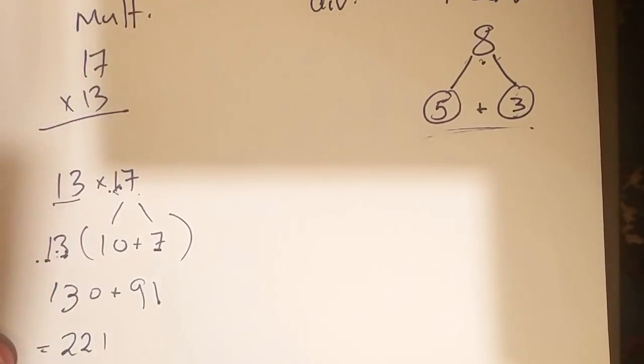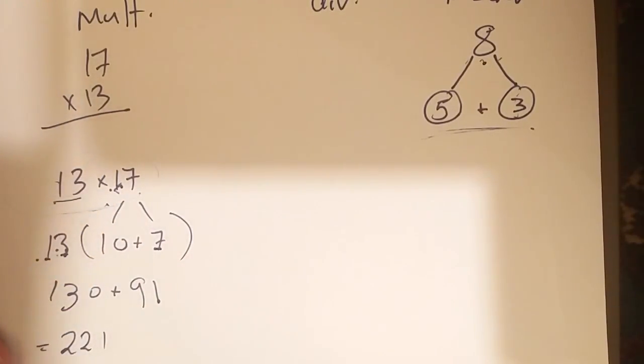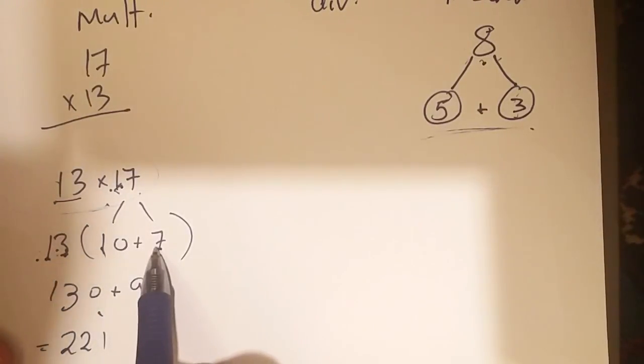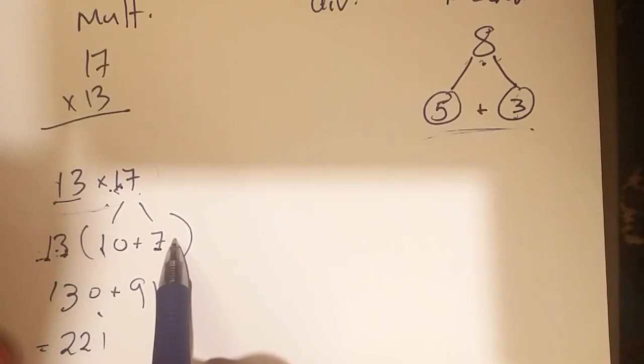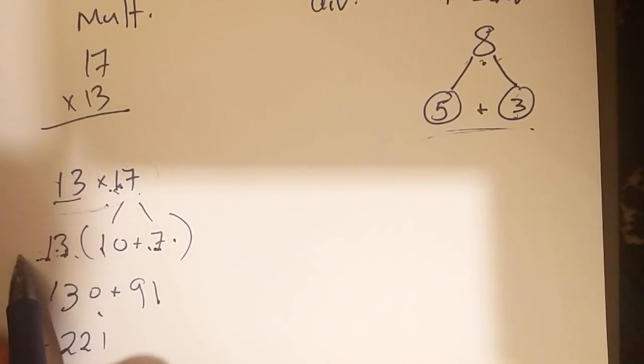Okay, there we go. And so, I can do these very complicated multiplications in my head because I say, okay, 13 times 10, that's 130. And I can go 13 times 7. Well, I know 10 groups of 7 is 70. 3 groups of 7 is 21. 21 plus 70, that's 91. 130 plus 91, 221.